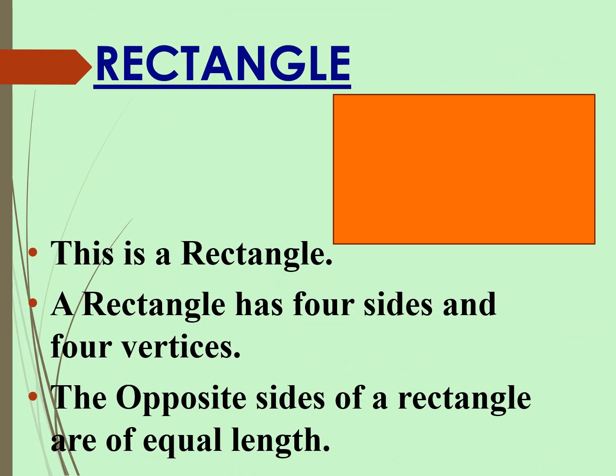Rectangle. This is a rectangle. A rectangle has four sides and four vertices. The opposite sides of a rectangle are of equal length.